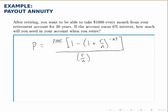So to figure out how much we need in the account, that's P, so we're looking for P. To find that we replace PMT with thousand, and then we have 1 minus 1 plus R over N to the negative N T.